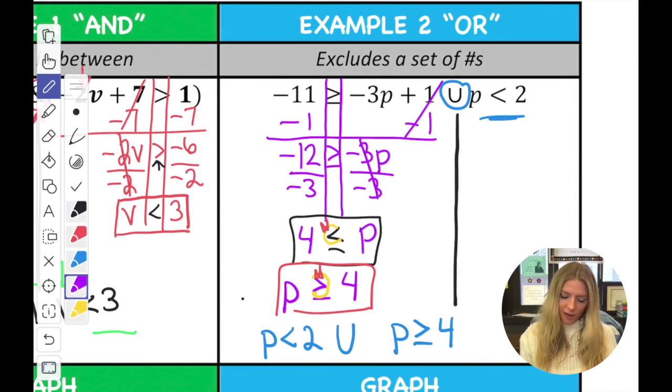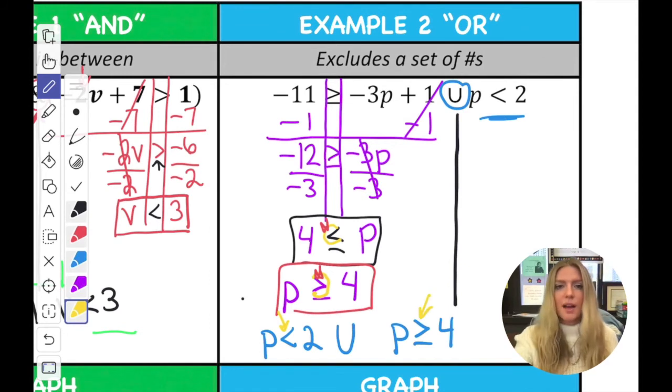I can tell it's an or for a couple of reasons. When we're in this particular format, since we have this symbol here, I can see that it's or. And also, if you take a look at the inequalities, that's pointing left and that's pointing right. So that means they're going the opposite way. So that means you're going to go or. So I'm not going to graph this one yet. I'll graph it a little later. Let's continue on to question number three.